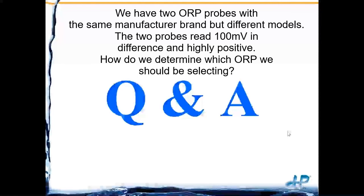Question: we have two ORP probes from the same manufacturer but different models — they read 100 millivolts apart in a highly positive application. How do we determine which is correct? Start by isolating them. If you have quick-disconnect cables, swap the probes and see if the 100 millivolt difference follows the sensor or stays with the transmitter. If it follows the sensor, investigate that sensor; if it stays with the transmitter, look at the transmitter age and cable.